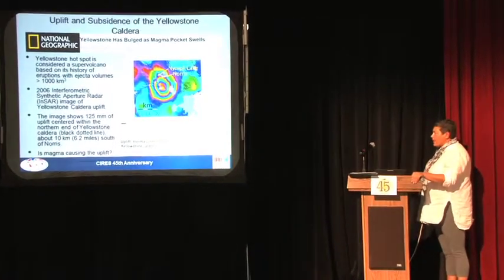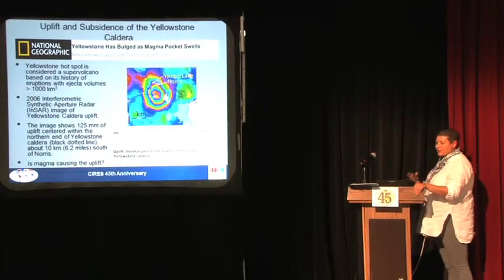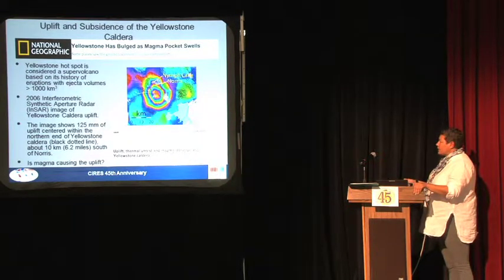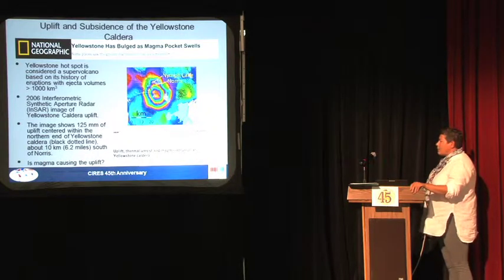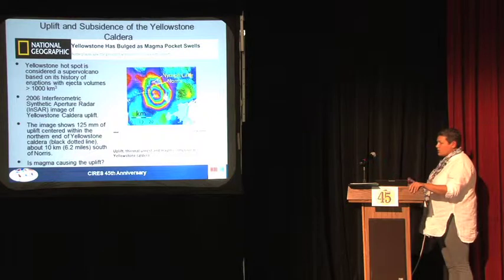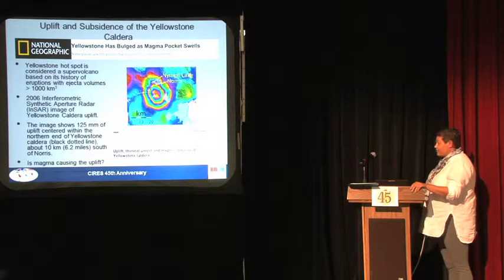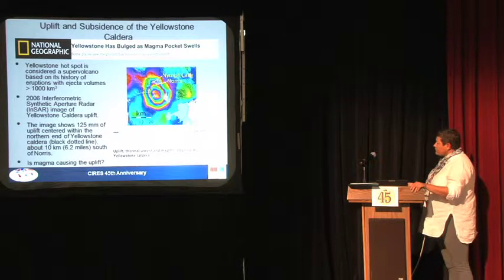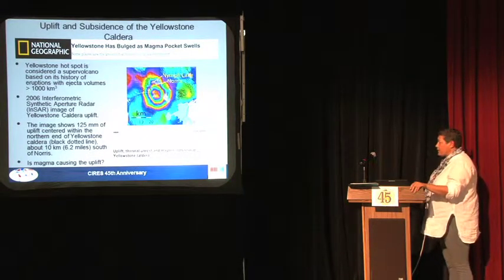The last thing I want to talk about, also involving data inversion, is the uplift and subsidence of the Yellowstone caldera. The Yellowstone hotspot is considered a supervolcano — defined as having ejecta volumes greater than 1,000 cubic kilometers when it erupts — and the historical record shows it has had these enormous explosions. So any time geophysicists see the ground in Yellowstone starting to go up, people get worried. This InSAR picture represents data from 1996 to about 2000 and shows that the maximum uplift is in this region, at a rate of 125 millimeters over those four years — which is really, really fast.